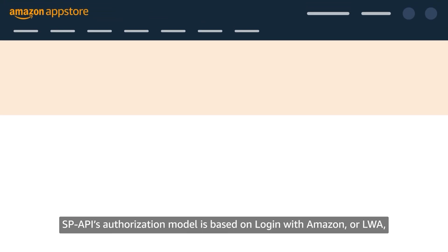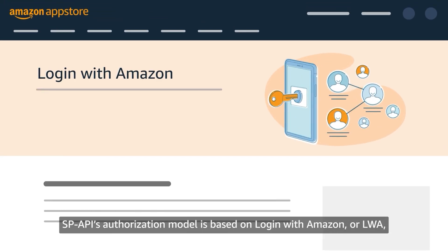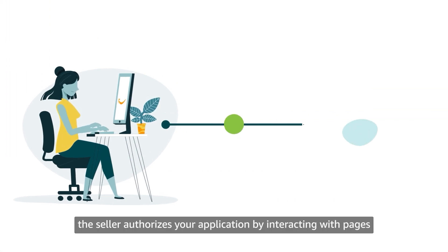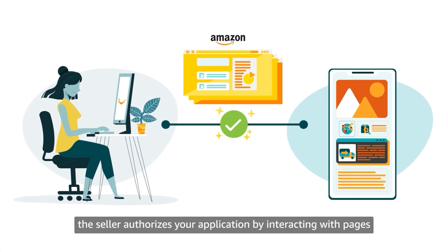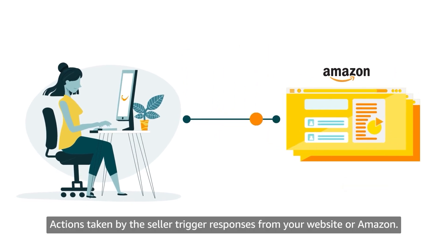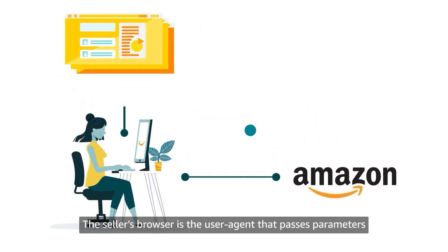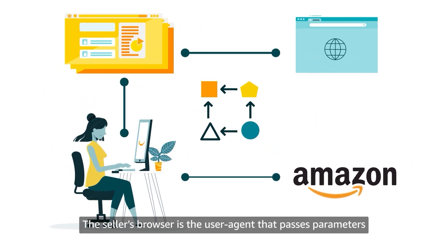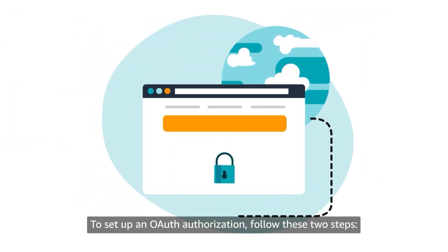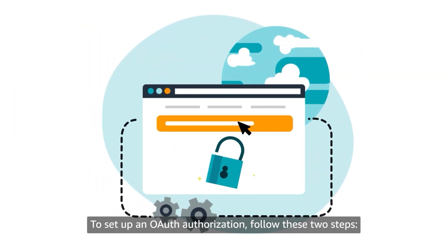SP API's authorization model is based on Login with Amazon, or LWA — Amazon's implementation of OAuth 2.0. In this model, the seller authorizes your application by interacting with pages displayed by Amazon and your website. Actions taken by the seller trigger responses from your website or Amazon, and the seller's browser is the user agent that passes parameters between your website and Amazon at each seller action. To set up an OAuth Authorization, follow these two steps: 1. Configure your website to accept and process the parameters that Amazon passes to it. 2. Redirect the seller's browser and pass parameters to Amazon.